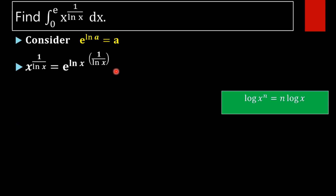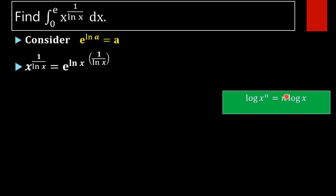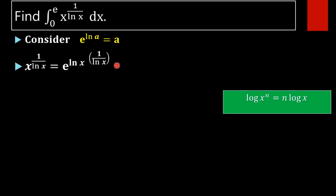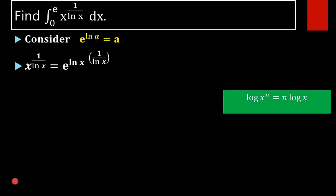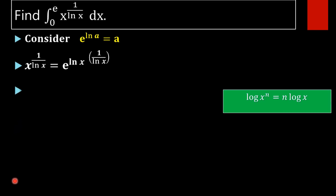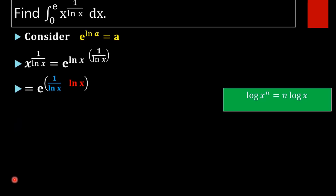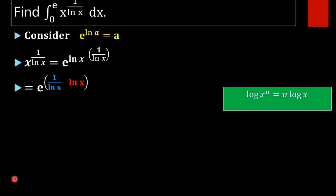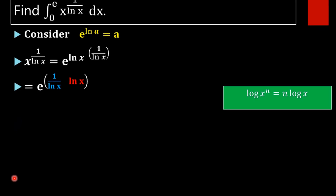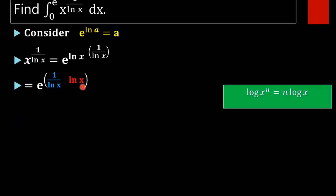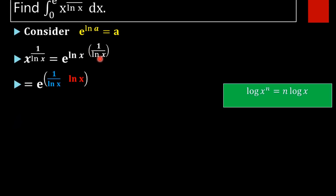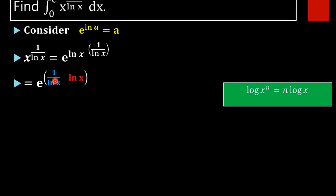In the next step, we use the identity e raised to ln(x^n) equals n·ln x. Here x is x itself and n is 1 by ln x. Using this identity, we rewrite it as n·ln x, where n is 1 by ln x, multiplied by ln x.